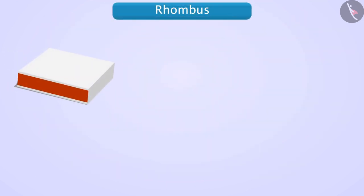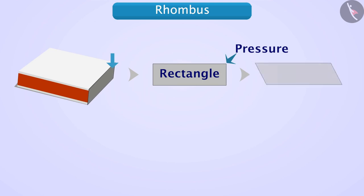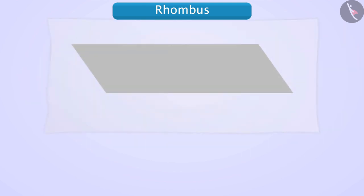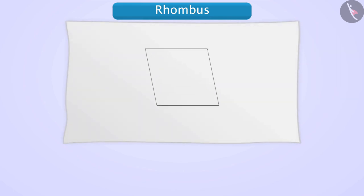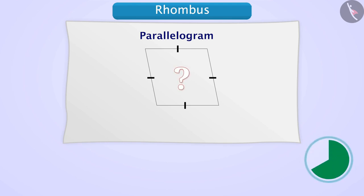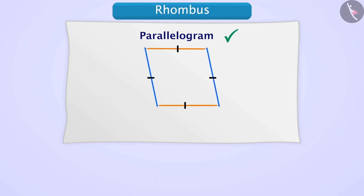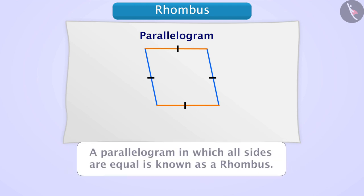Now let's understand the rhombus. We have seen that if we take out the matchbox tray and apply pressure on one of its open sides, a parallelogram is formed. Just think that if all sides of the open part are equal, then it will still be called a parallelogram, because its opposite sides are parallel. Though this is a parallelogram, all of its sides are equal. A parallelogram in which all sides are equal is known as a rhombus.